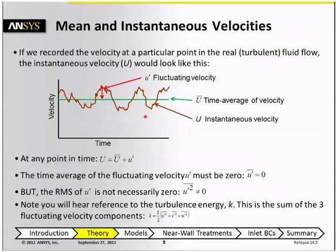We can take the instantaneous velocity and decompose it into a mean part, or a time average part, which is indicated by the green curve, and a fluctuating component, which by definition is the difference between the instantaneous velocity and the time average value. This means that at any point in time, the instantaneous velocity is equal to the mean velocity plus the fluctuating velocity.